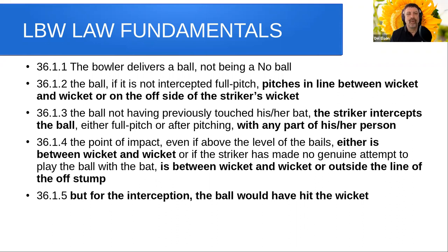Point four: the point of impact, even if above the level of the bails, either is between wicket and wicket, or if the striker has made no genuine attempt to play the ball with the bat, is between wicket and wicket or outside the line of the off stump. The important phrase here is that a batter playing a stroke at the ball may not be given out if he struck outside the line of the off stump.